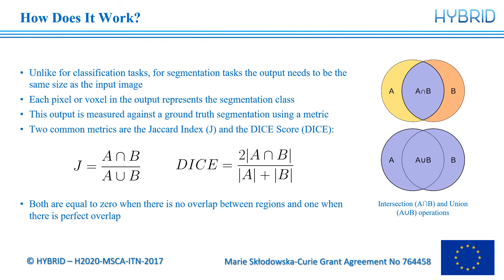How does it work? For classification tasks, the output layer generally has as many nodes as there are classes. For segmentation tasks, we need to output an image the same size as the input image, so the network architecture needs to be adapted accordingly. With this output, the value of each pixel or voxel represents the segmentation class of that voxel.